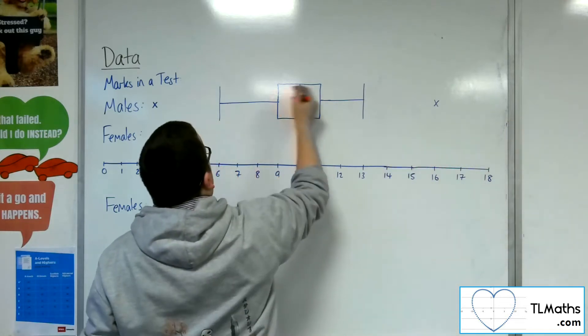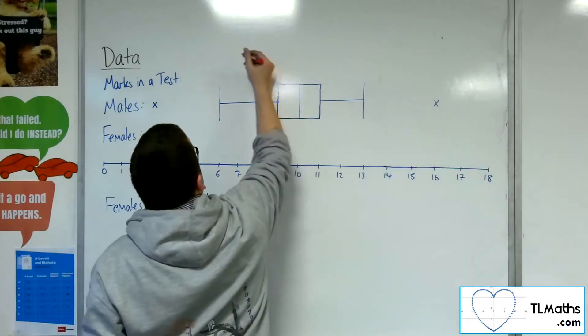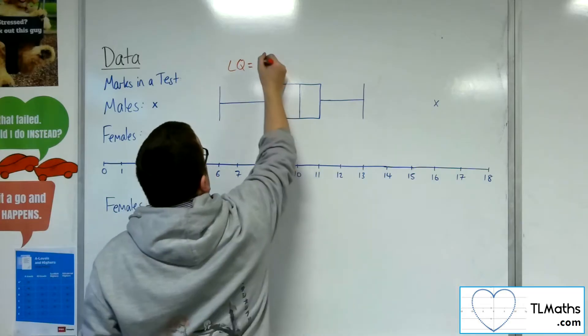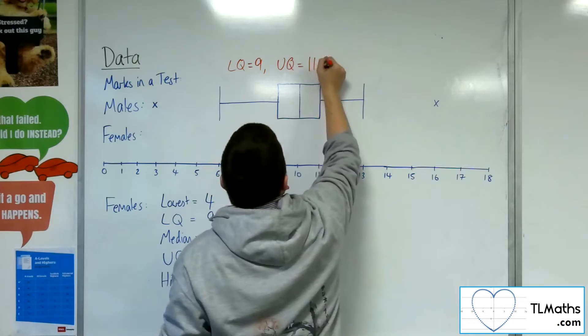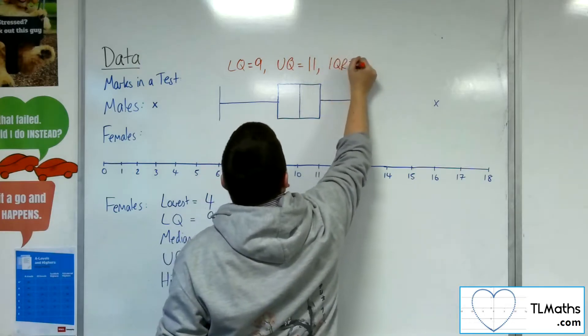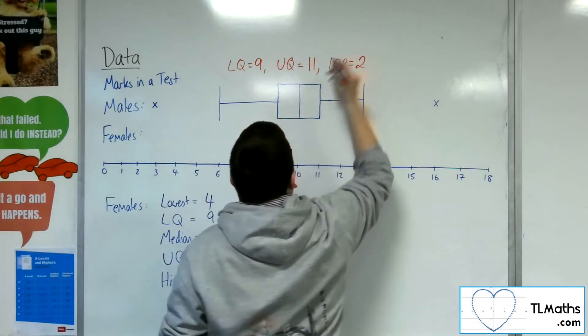So I can identify from my diagram the lower quartile, which is 9, the upper quartile, which is 11, and the interquartile range. So that would be 11 take away 9, which is just 2.